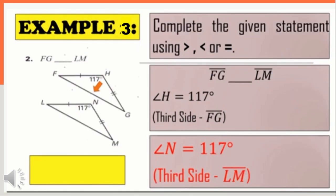For the third example, line segment FG is blank compared to line segment LM. There are two pairs of congruent sides: line segment FH and line segment LN are congruent, and line segment HG is congruent to line segment NM. The included angle of triangle FGH, which is angle H, is 117 degrees. The included angle of triangle LMN, which is angle N, is also 117 degrees. Since angle H equals angle N, therefore line segment FG is equal to line segment LM.